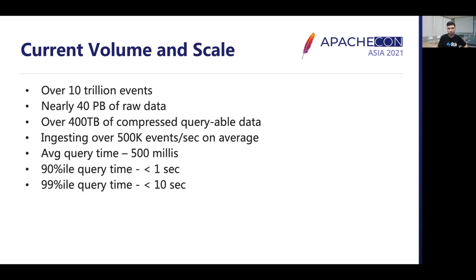Here are some numbers to showcase the current volume and scale the service operates on. It stores over 10 trillion events, nearly 40 petabytes of raw data, compressed to over 400 terabytes of queryable data. The cloud service is continuously ingesting over 500,000 events per second on average. In terms of performance, we achieved 500 milliseconds of average query time, less than one second at the 90th percentile, and less than 10 seconds at the 99th percentile.